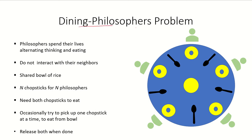The dining philosophers problem is a classic synchronization problem. Here we have a set of philosophers who are seated around a circular table. These philosophers spend their lives thinking or eating and they do not interact with their neighbors. There is a shared bowl of rice in the center and there are n chopsticks for n philosophers.